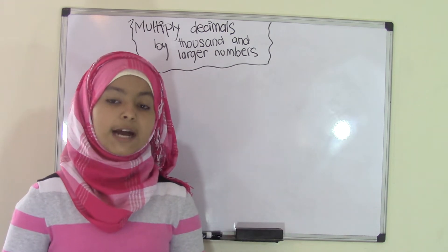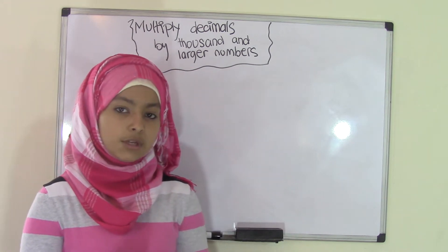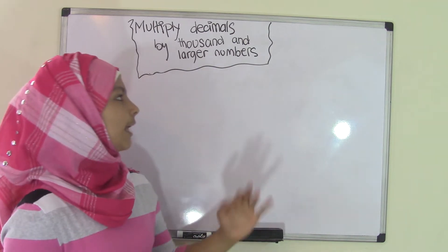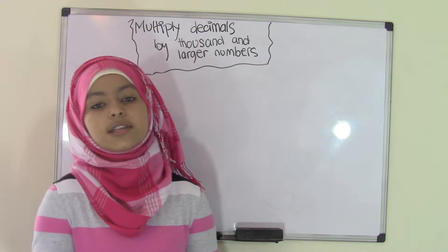In our previous two videos, we did how to multiply decimals by 10 and 100. This is pretty much the same thing, except we're using larger numbers like thousand, ten thousand, one hundred thousand, and so on.